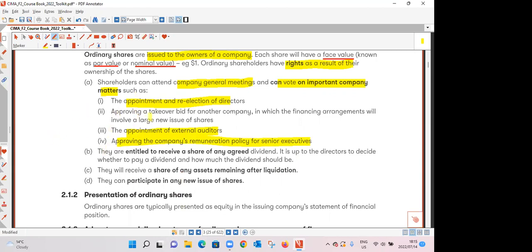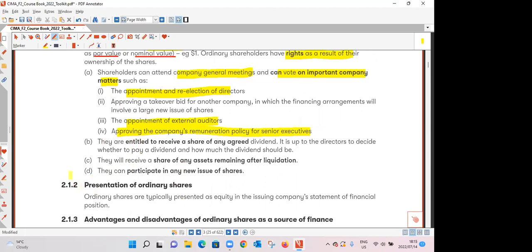Another right of ordinary shareholders is their entitlement to receive a share of any agreed dividend. Please take note of the word agreed. Who agrees on this dividend? It's the directors. So if the directors feel that there aren't sufficient distributable reserves then they will just not declare any dividends but at the same time they have to balance the act otherwise if they fail to declare dividends yet there is an expectation that might affect the share price.